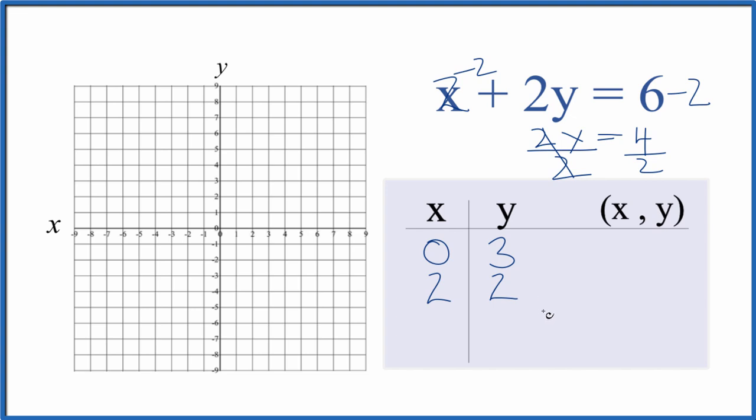And we could stop here, but it's good to have a third point in case we've made an error. So let's just say 4 here. If x is 4, we have 4 plus 2y equals 6. Let's subtract 4 from both sides.